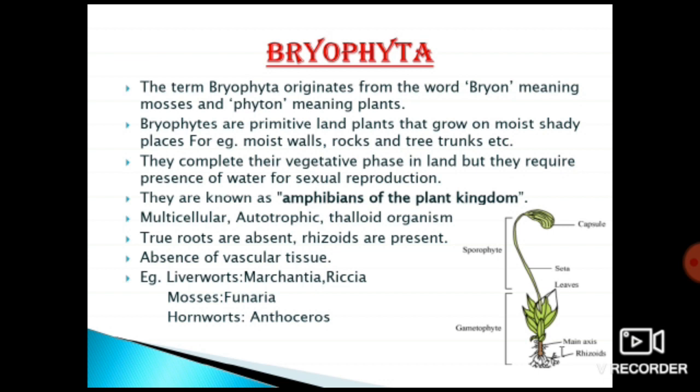From this example, we come to know the first characteristic of bryophytes: bryophytes grow in moist and shady places. Moist means the place is always wet, and shady means it is not getting proper sunlight.